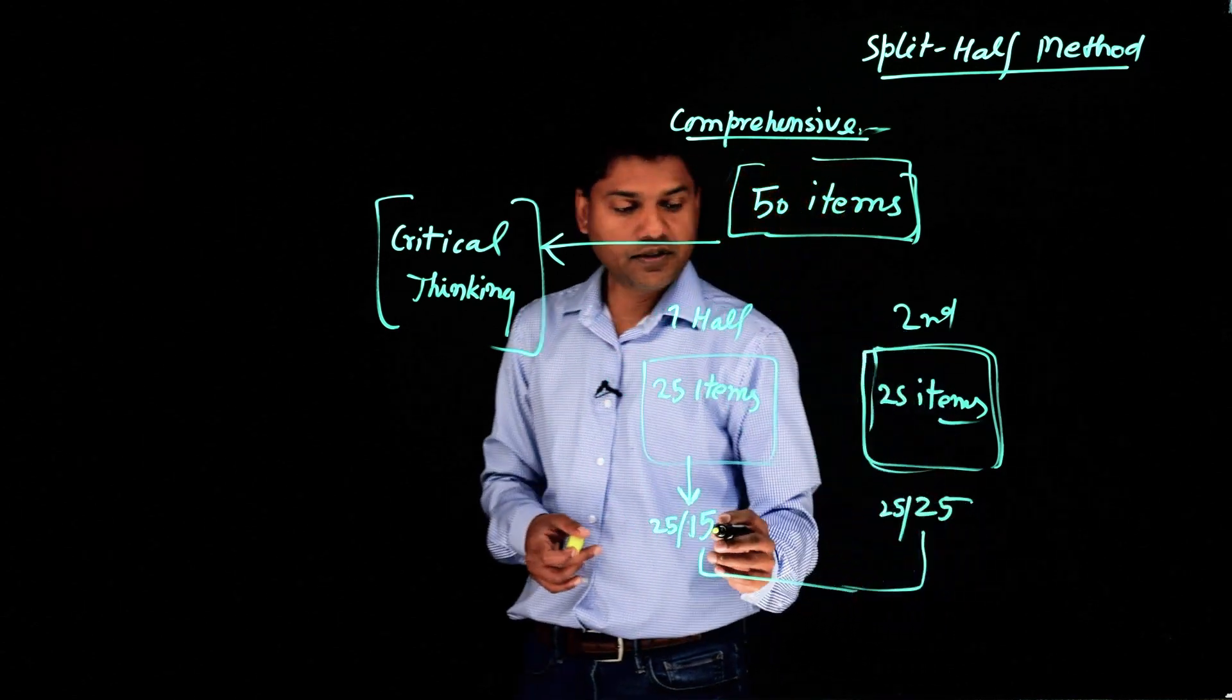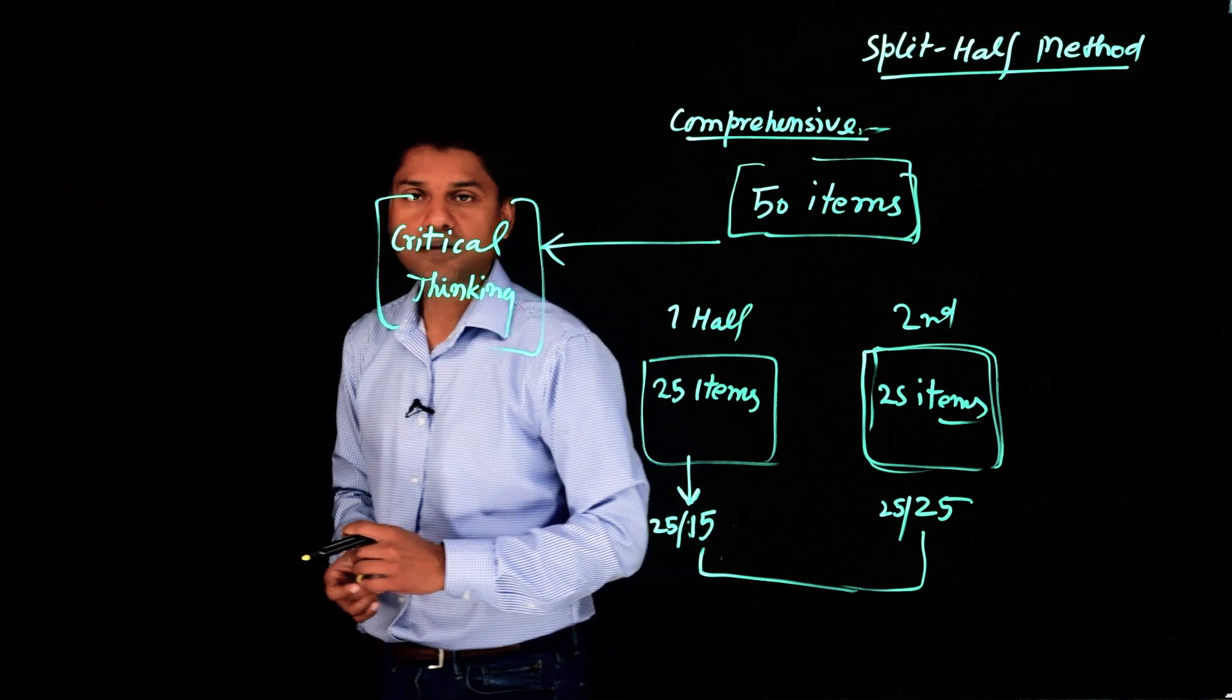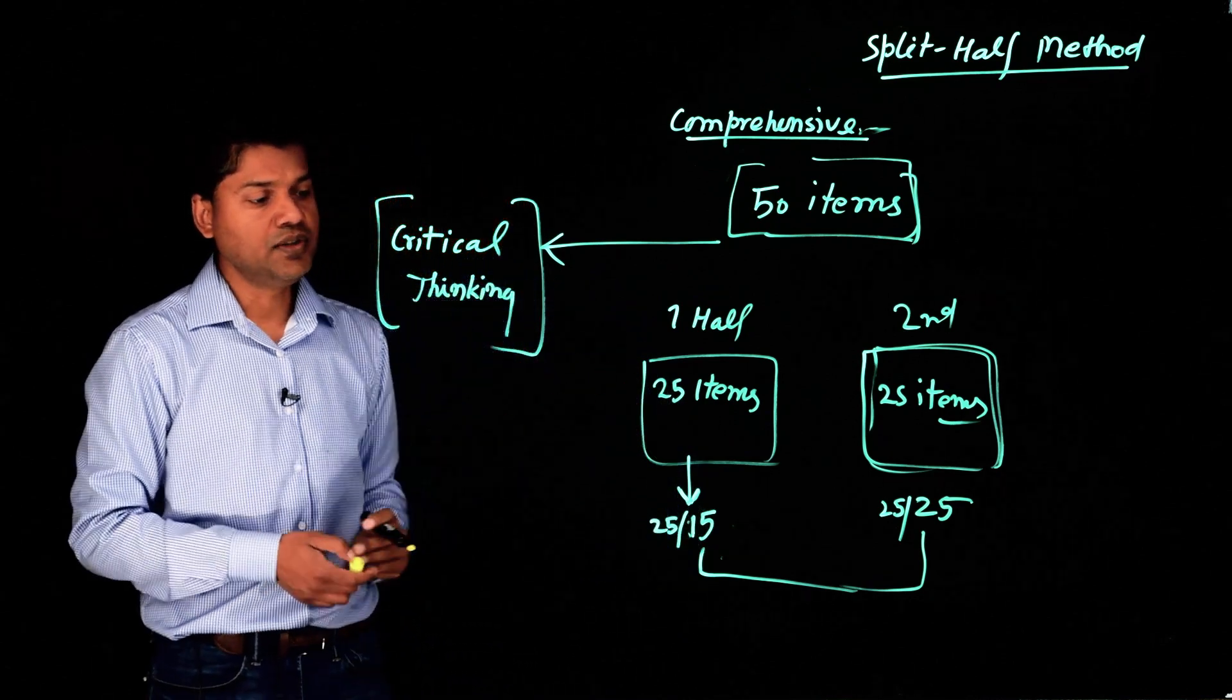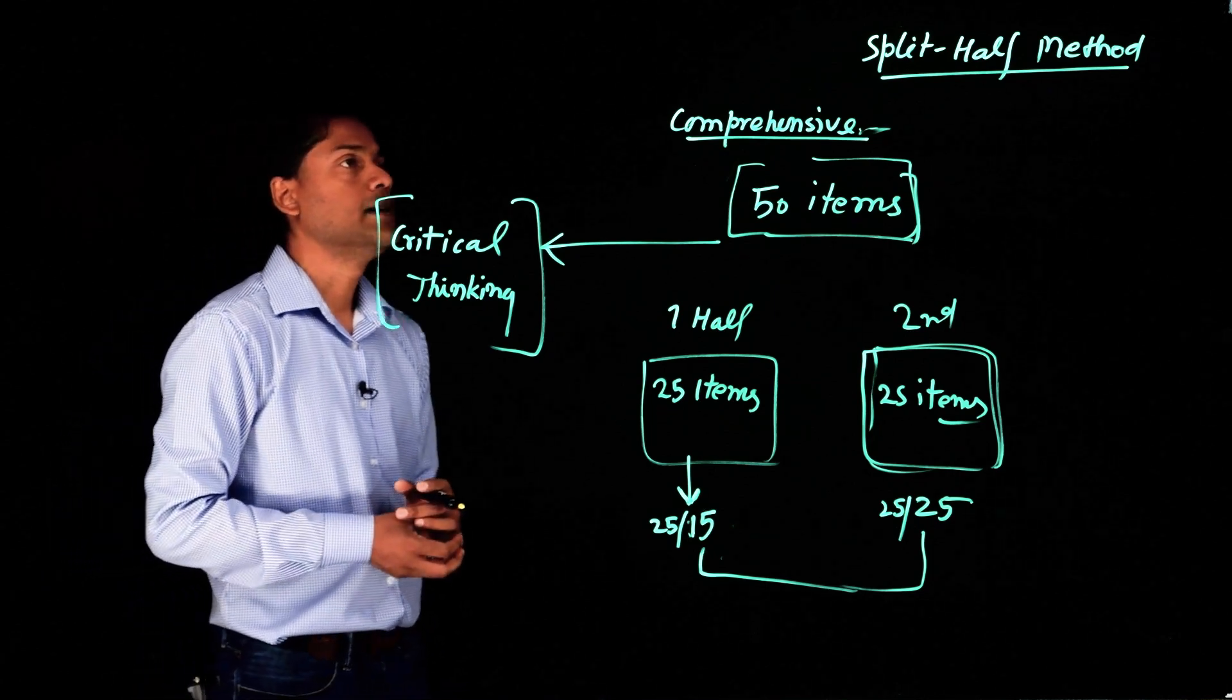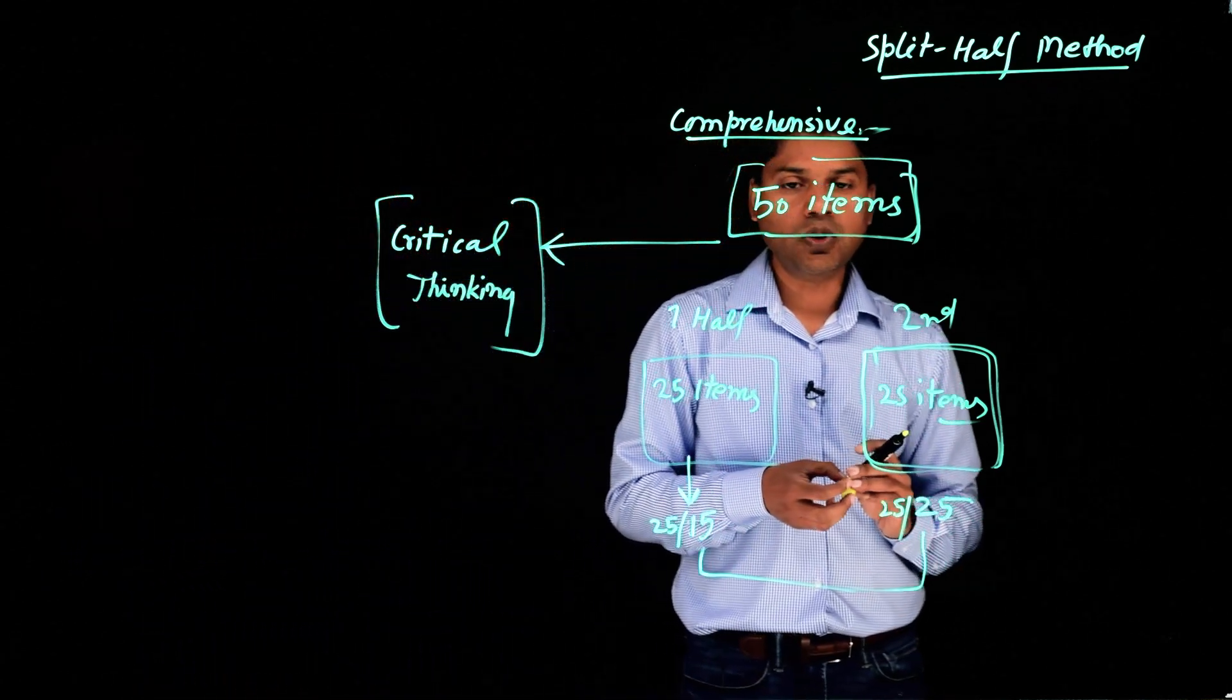Now you see the difference: 15, 25, which is not very consistent. They are not very close. So again, the correlation between these two is not high. And we call it that reliability in this case is low.